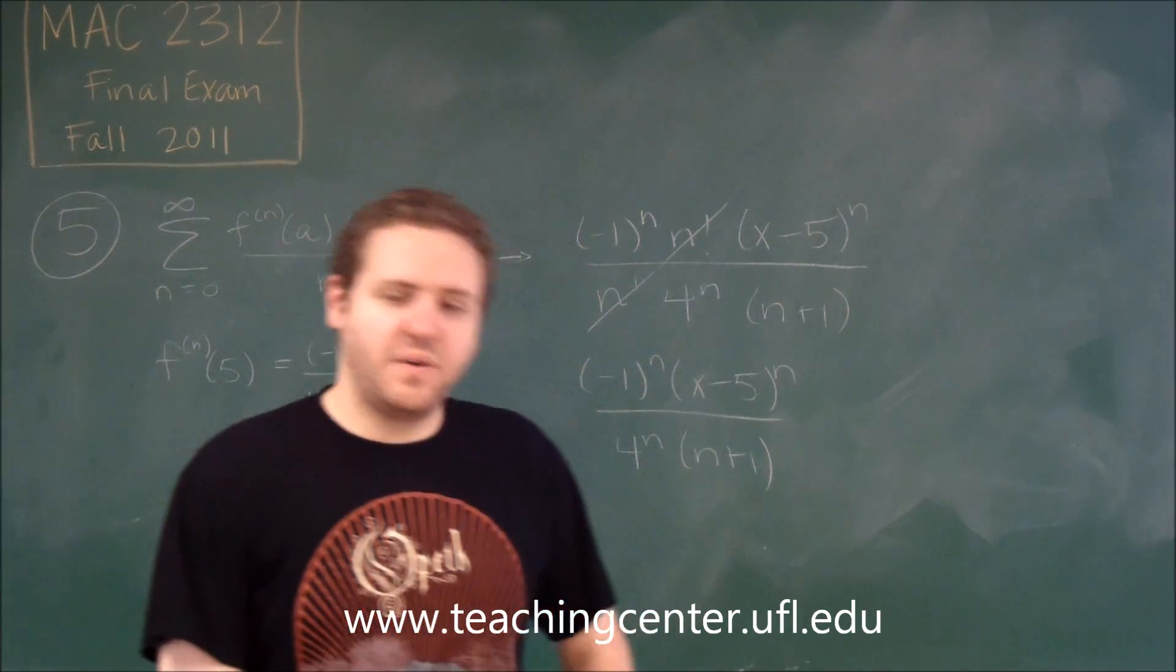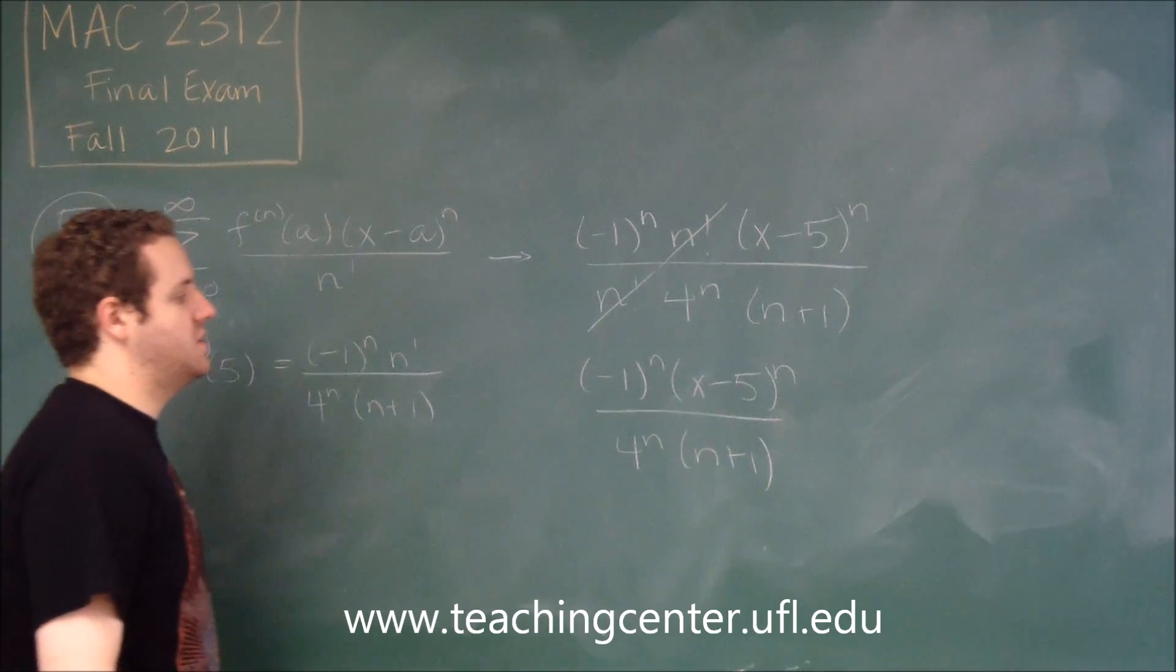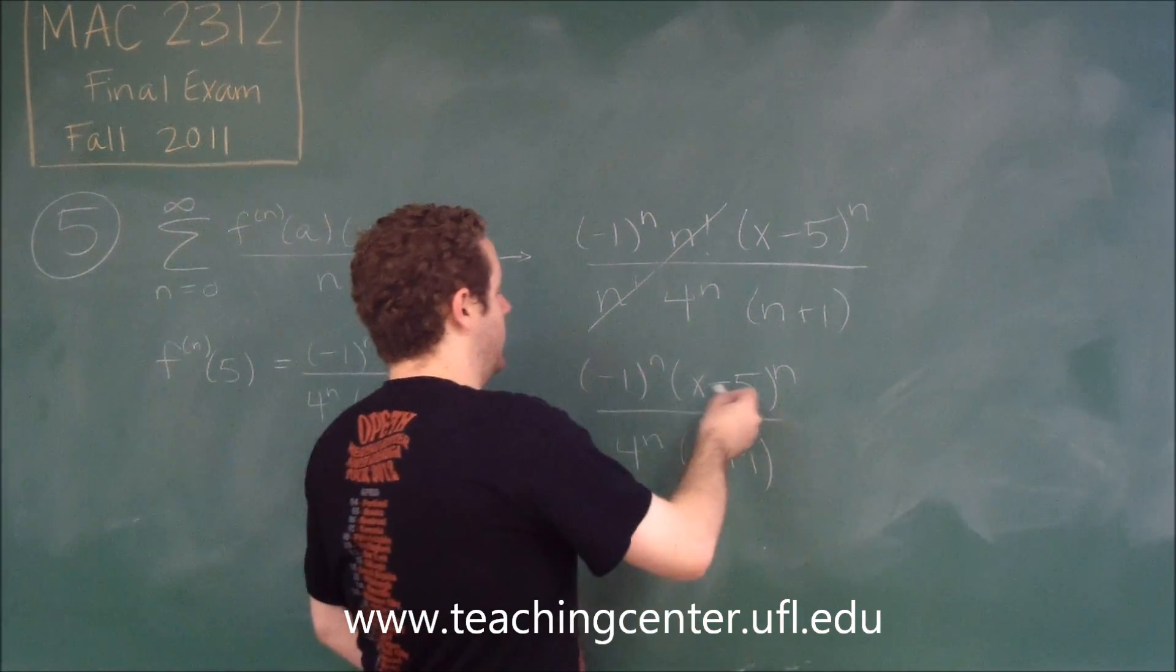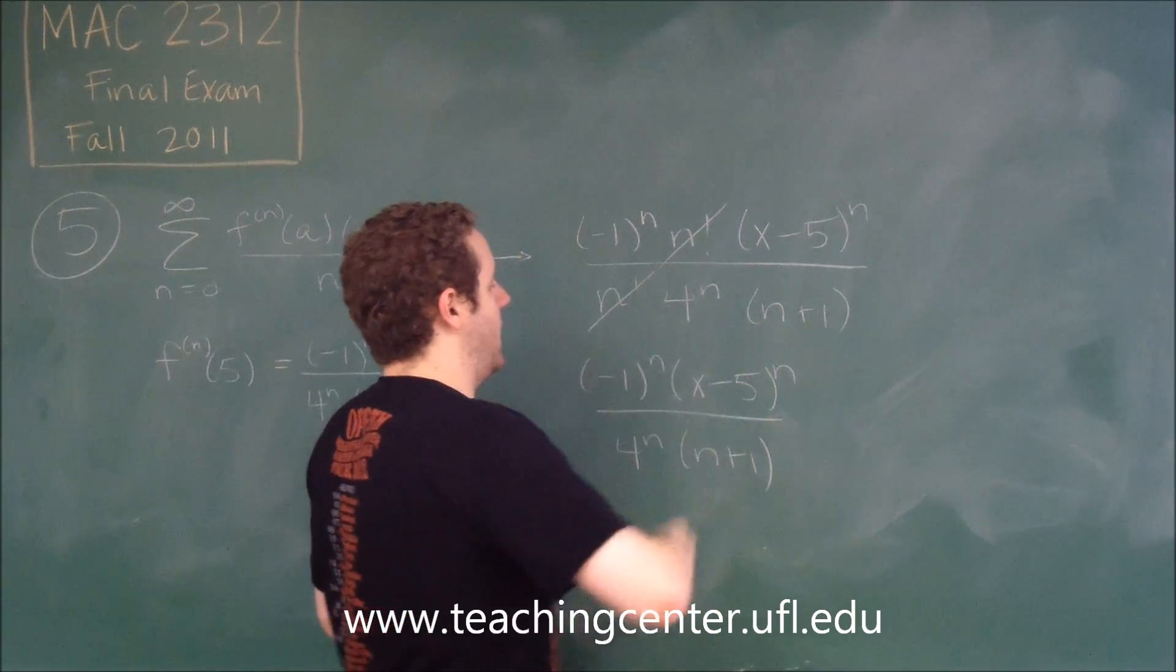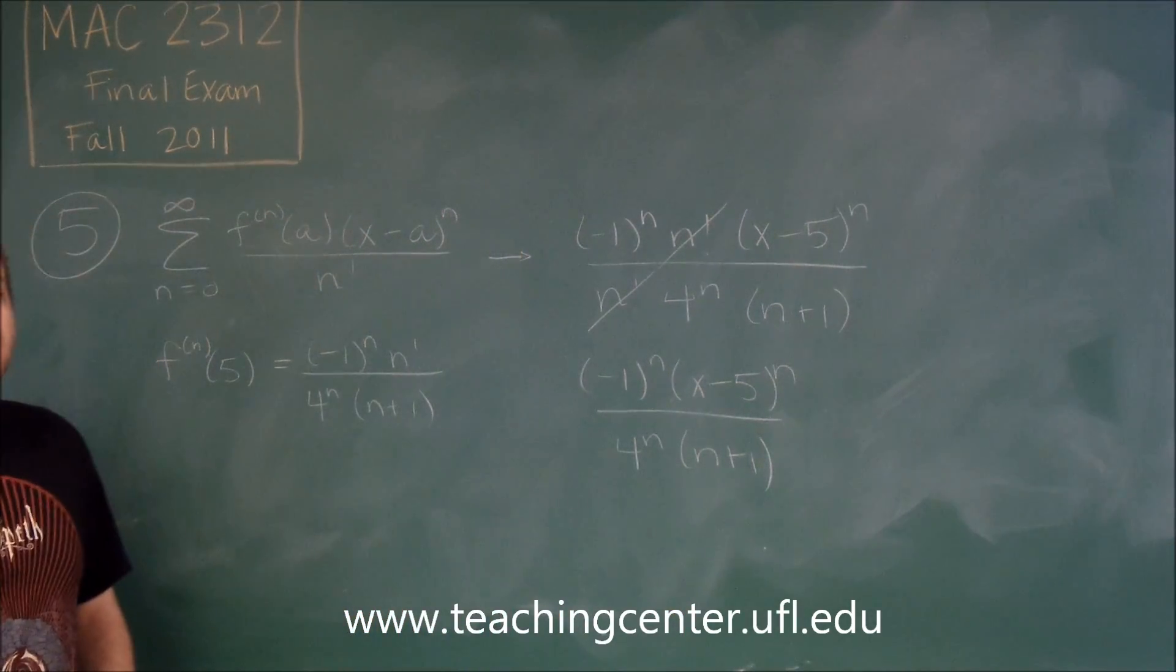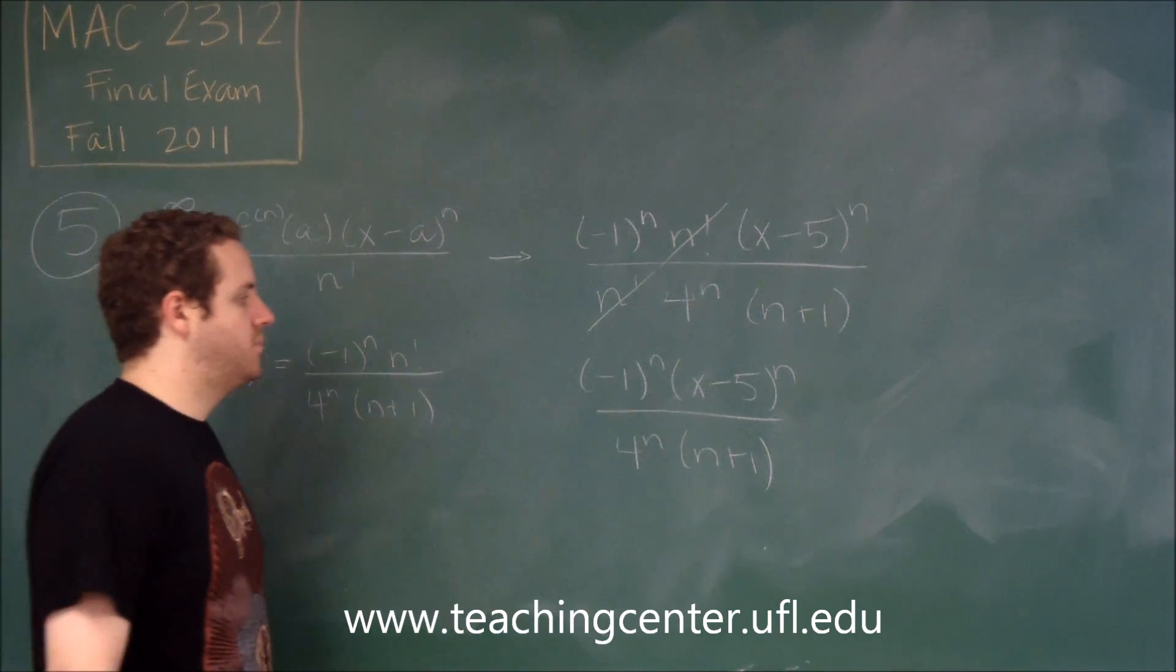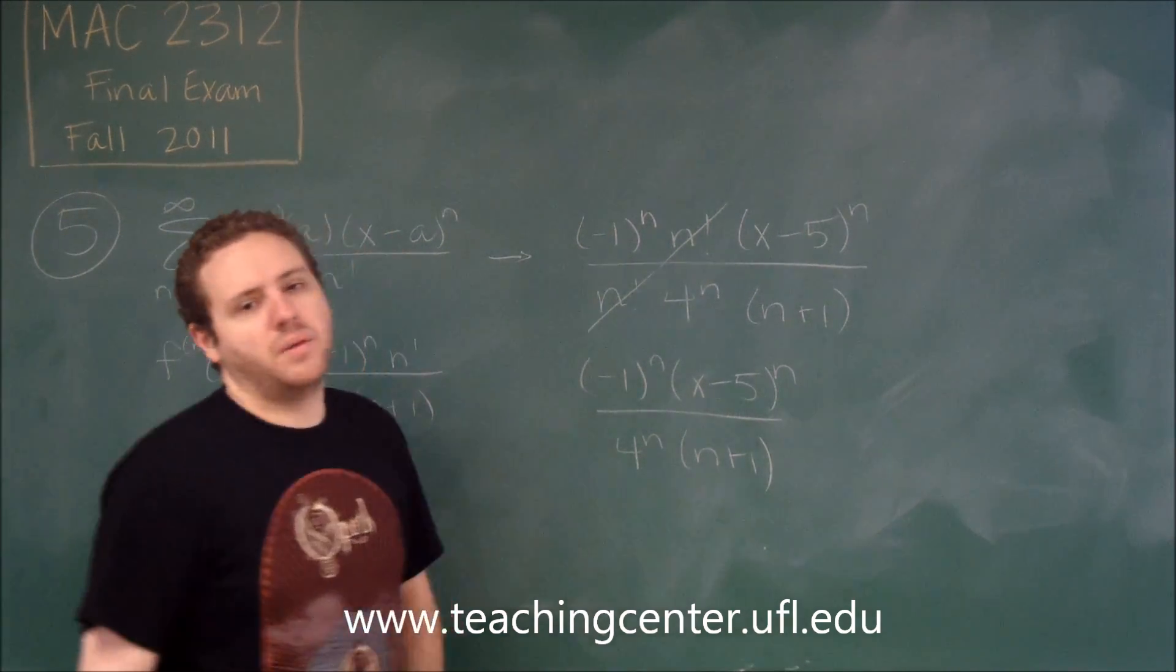So we need to find what is its radius of convergence. Well, its radius of convergence is going to be whatever gets us to our endpoints essentially. So you can think of this either by doing the ratio test, which would be effective here but probably a little unnecessary.